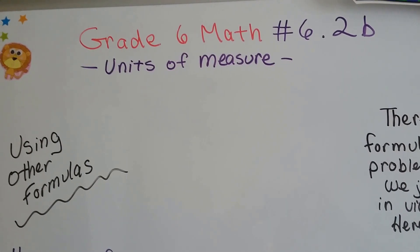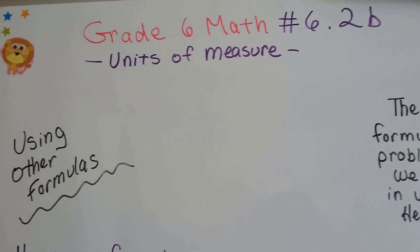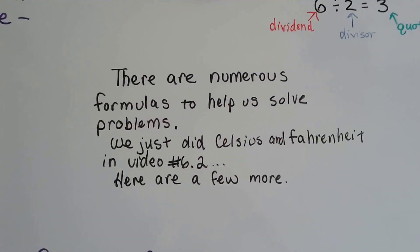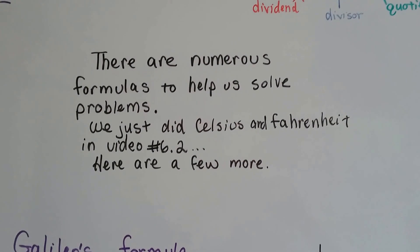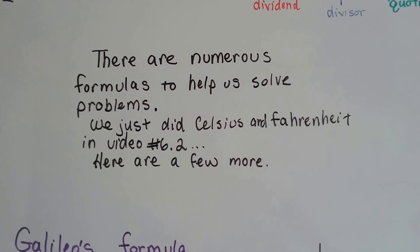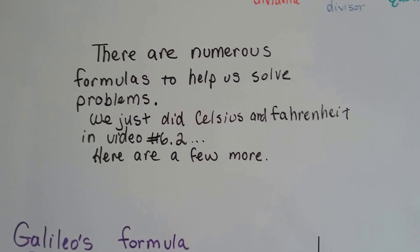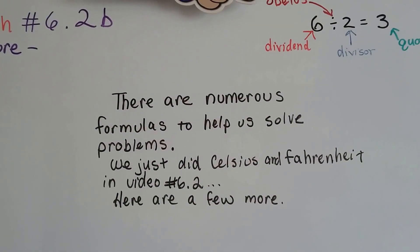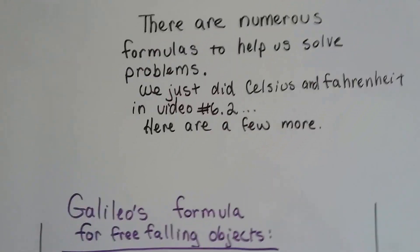Grade 6 math number 6.2b, using other formulas. There were some other formulas in the book, so I thought we would cover them to give you a hand. There's numerous formulas in the world to help us solve problems. We just did Celsius and Fahrenheit in video 6.2. This is 6.2b, as you can see. So here's a few more.